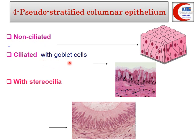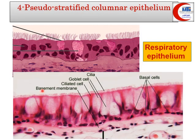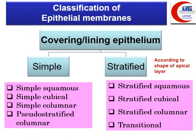Pseudostratified columnar epithelium may be non-ciliated, or ciliated with goblet cells — called pseudostratified columnar ciliated with goblet cells — lining the trachea and bronchi. It may also have stereocilia, which are long immotile microvilli and not true cilia. This type with stereocilia is present in the epididymis, part of the male genital tract.